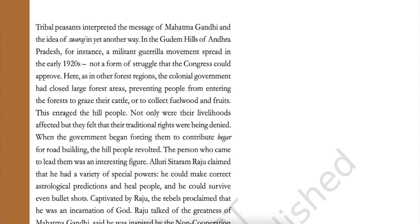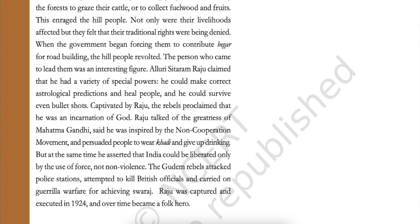Tribal peasants interpreted the message of Mahatma Gandhi and the idea of Swaraj in yet another way. In the Gudem hills of Andhra Pradesh, a militant guerrilla movement spread in the early 1920s — not a form of struggle that the Congress could approve. Here, as in other forest regions, the colonial government had closed large forest areas, preventing people from entering the forest to graze their cattle, collect fuel wood and fruits. This enraged the hill people. Not only were their livelihoods affected, but they felt that their traditional rights were being denied. When the government began forcing them to contribute beggar for road building, the hill people revolted.